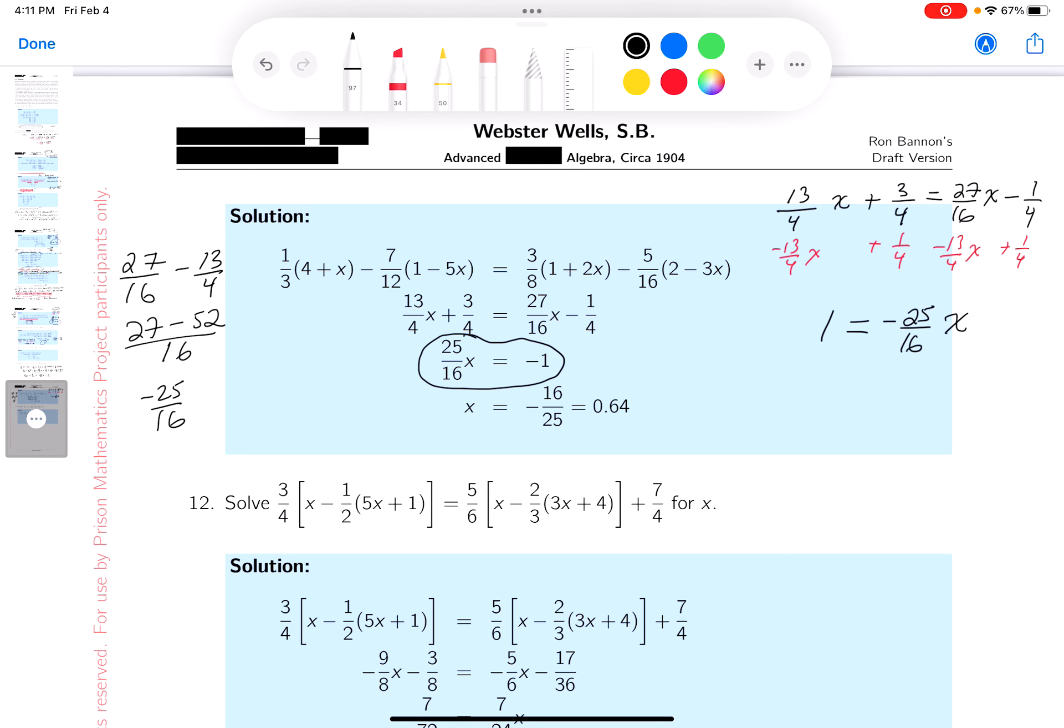You could actually multiply both sides by minus one and what would you get? Minus one equals twenty five sixteenths of an x. Now what I would recommend to do now is you could divide both sides by the coefficient, but I'm going to multiply both sides by the reciprocal of the variable term.